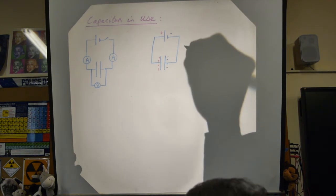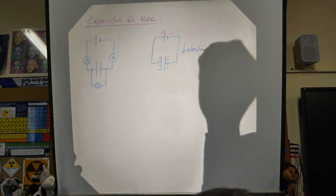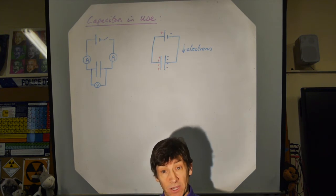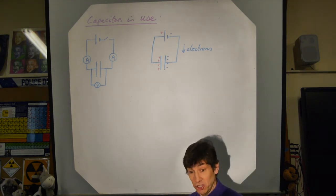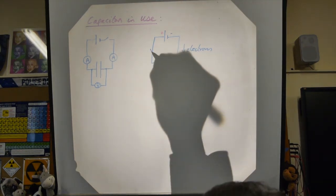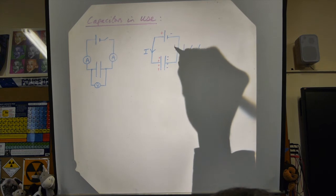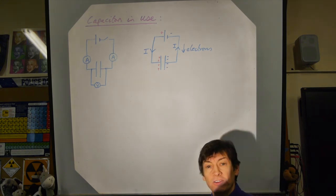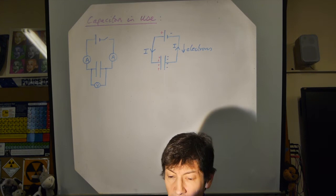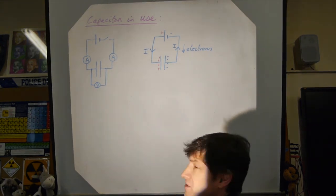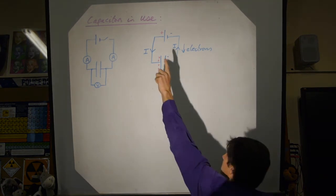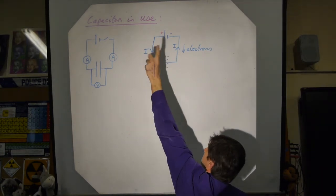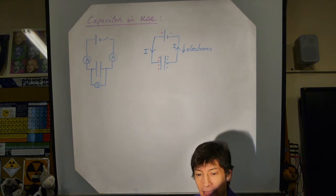The electrons from one plate have been pumped by the battery onto the other plate, making one plate negative and one positive. The two plates have equal but opposite charges. The electrons go one way, but conventional current flow is always from plus to minus — the direction a positive charge would move — so that defines the current direction.